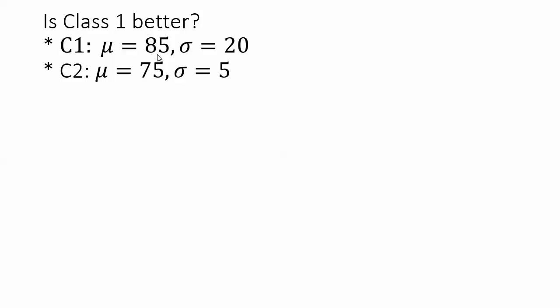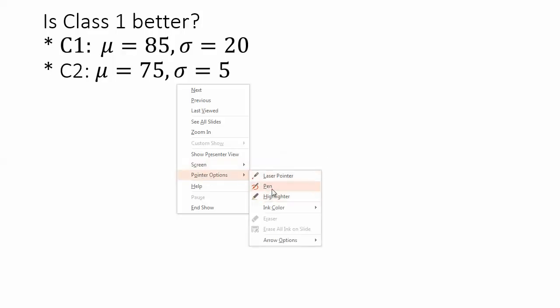Well, class 1 technically has a higher average, and the flaw of averages would tell us that class 1 performed better. But now that we know about variability, we're going to take variability into account in order to make sure that we're being as accurate as possible, or that we're taking all things into consideration.